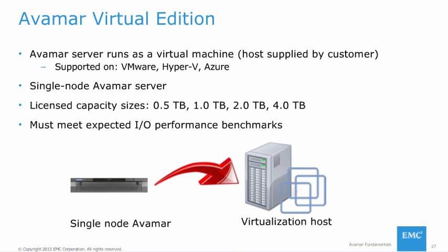The AVE license capacity sizes include 0.5 terabytes, 1 terabyte, 2 terabytes, and 4 terabytes. Each of these capacity versions has a set of minimum requirements for memory, disk I/O, and storage. The choice of AVE version to be deployed depends on the type of data in the environment to be backed up and the expected daily change rate. The host server is supplied by the customer, and installation of AVE on a virtual machine is performed by EMC-trained personnel. The AVE benchmark test must be run to ensure that the server hardware and the virtual environment meet the expected I/O performance benchmarks, and also to help determine the impact of AVE on other virtual machines running on the same physical server.